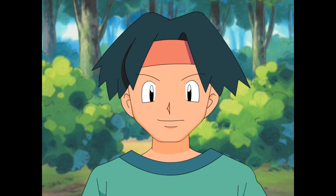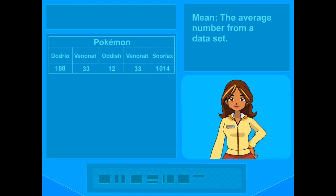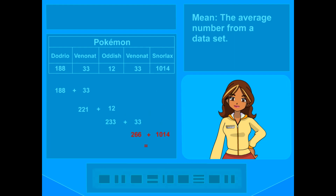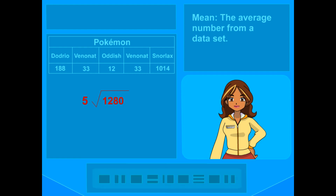Now, what about this? Professor Oak wants to know the mean, so we can figure out how much food we'll need on average. Mean? All the Pokémon seem pretty nice. Actually, in this case he's talking about what a lot of people refer to as the average. The mean of a set of numbers is the typical value of that set. First, you add the different numbers together — that's 1,280. Now to find the average, divide the answer by the number of Pokémon you started with, 5. 1,280 divided by 5 is 256! Snorlax's big weight really makes an impact!